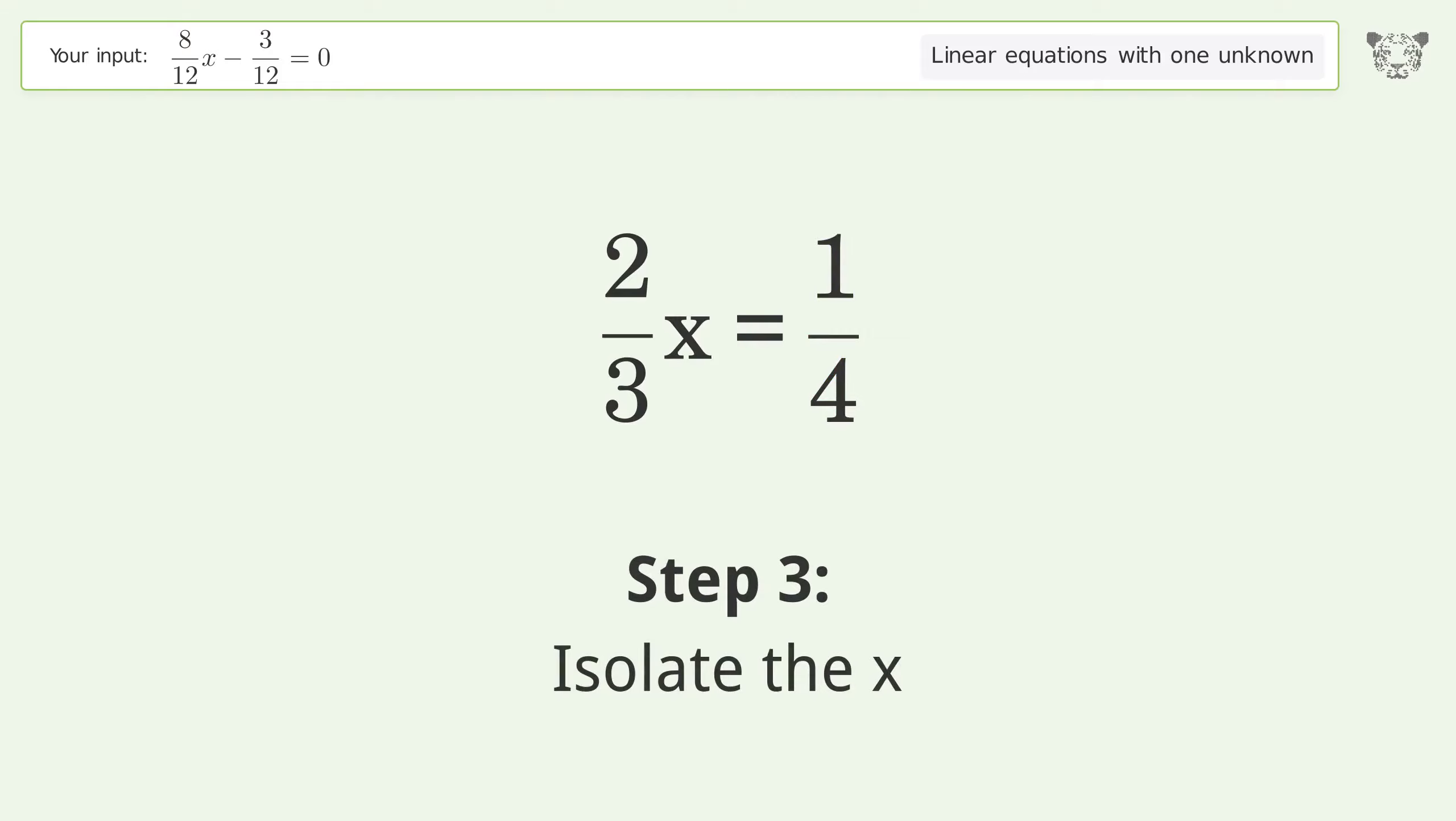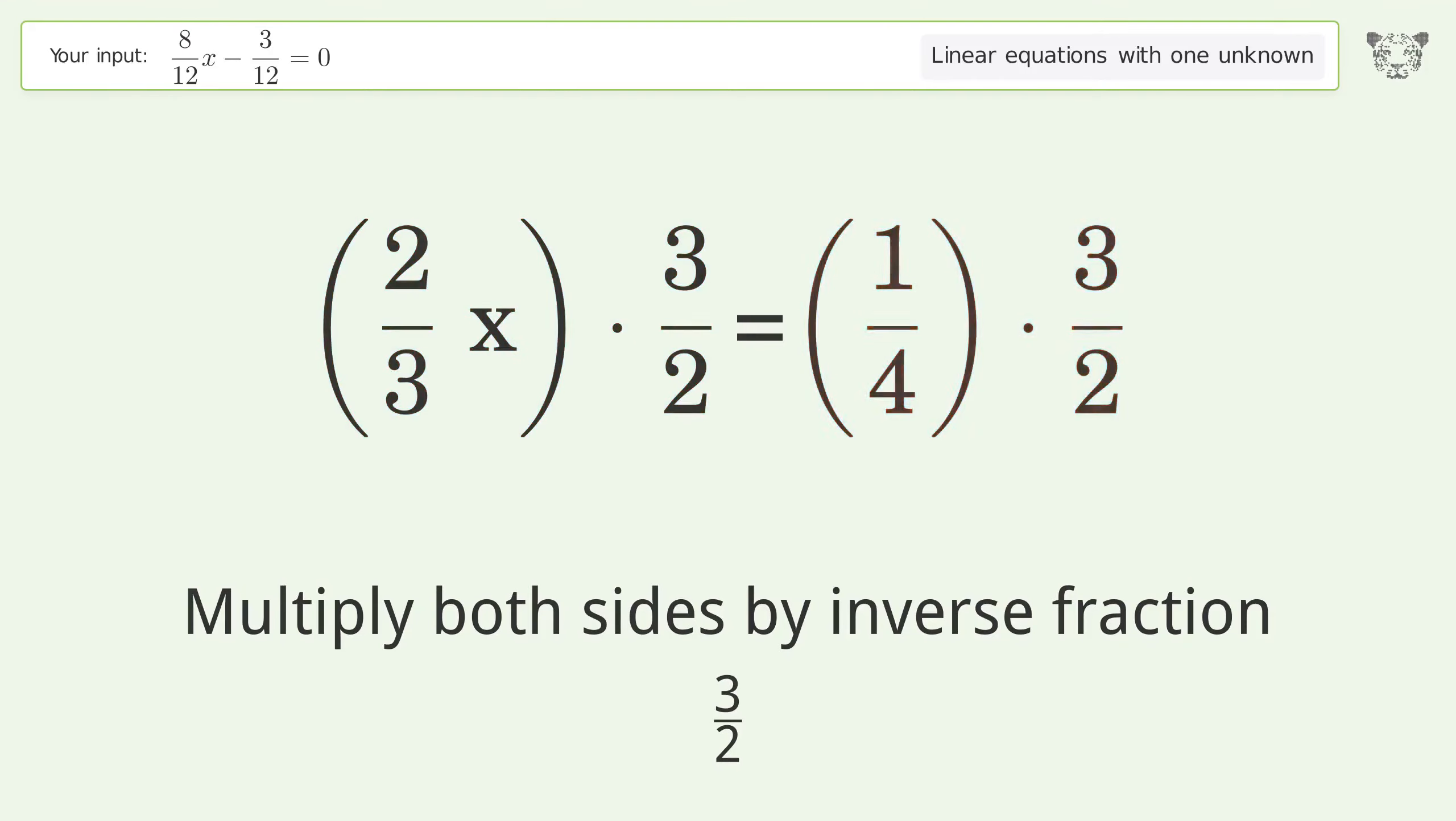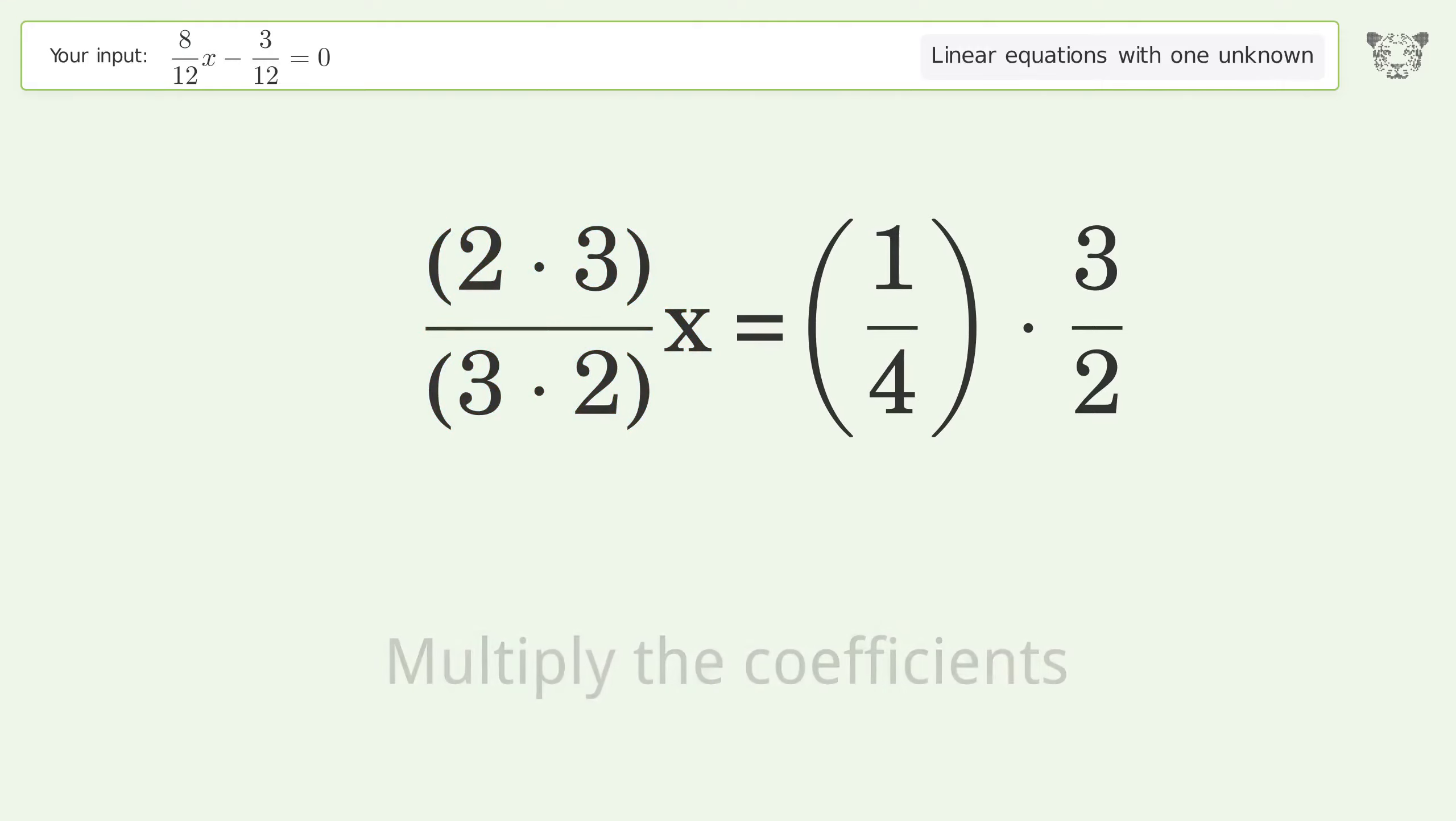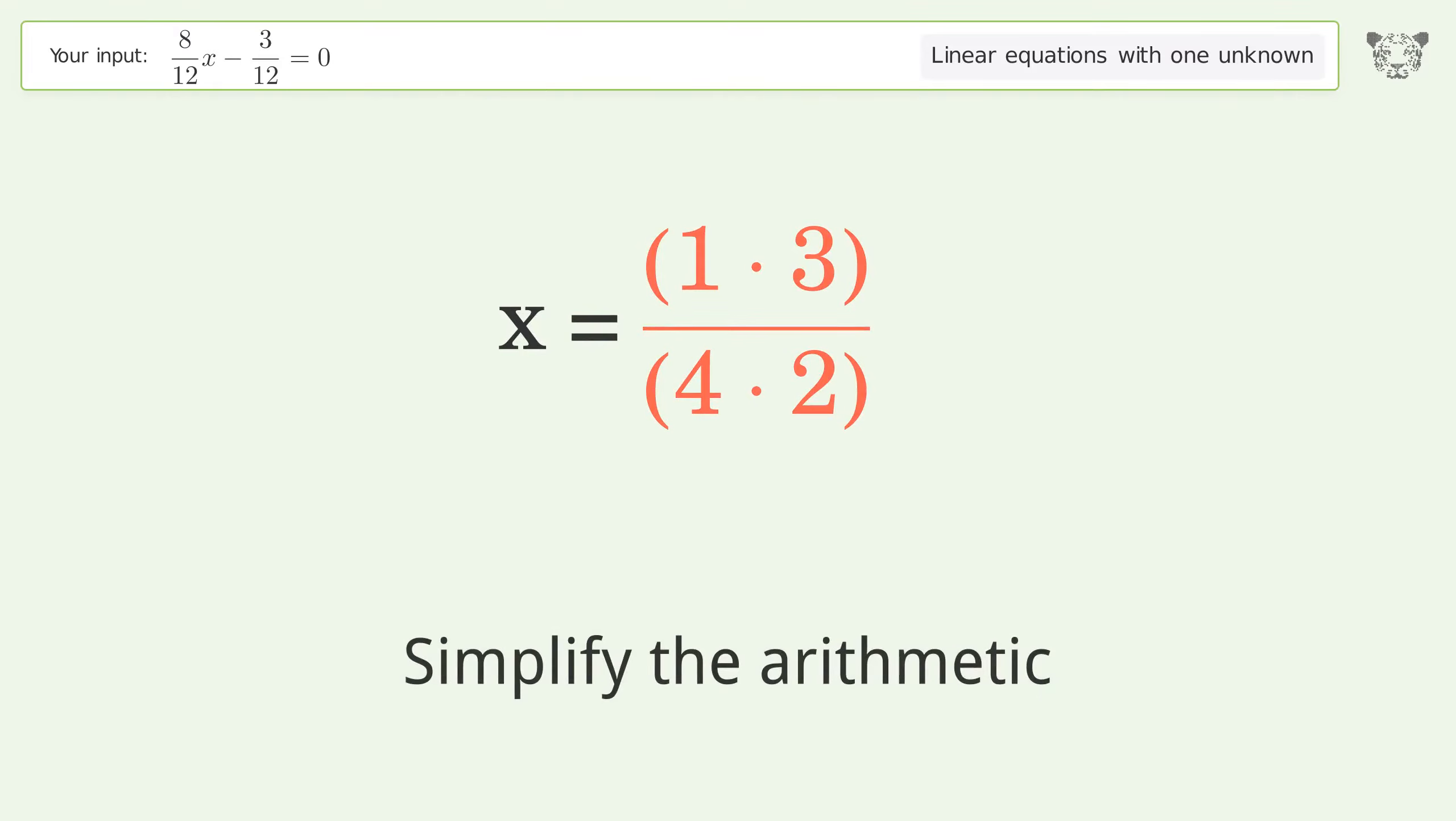Isolate the x. Multiply both sides by inverse fraction 3 over 2. Group like terms. Multiply the coefficients. Simplify the fraction. Multiply the fractions. Simplify the arithmetic.